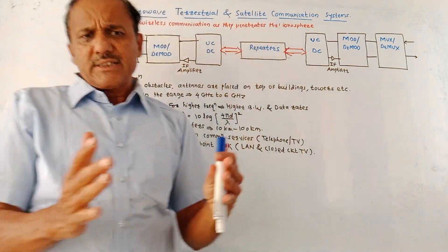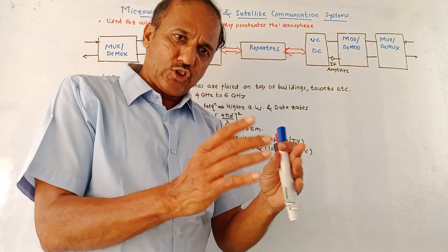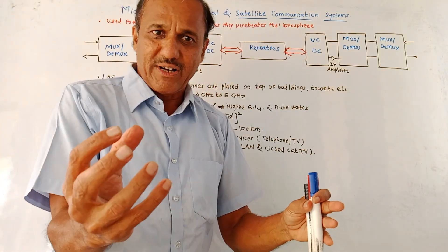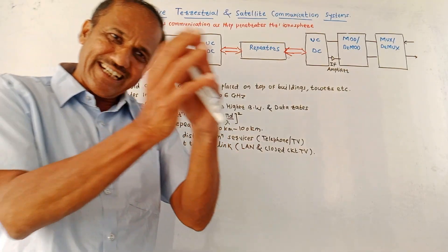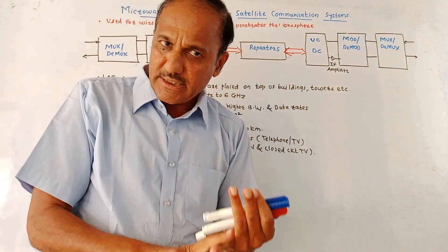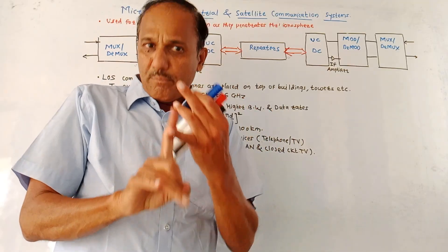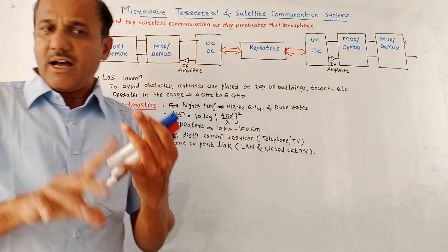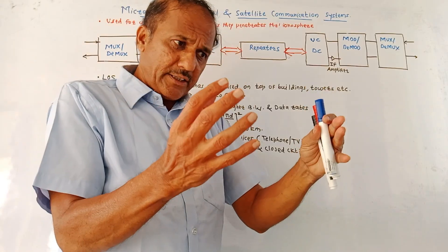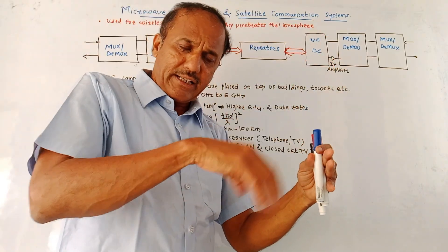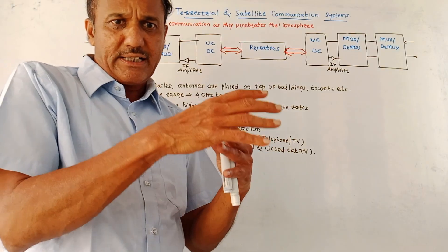In very simplified language, this communication system consists of a transmitter and receiver. At the transmitter, the baseband signal is transmitted. Baseband signal is a combination of data, voice, or video. It is converted by using a suitable antenna into micro signals.